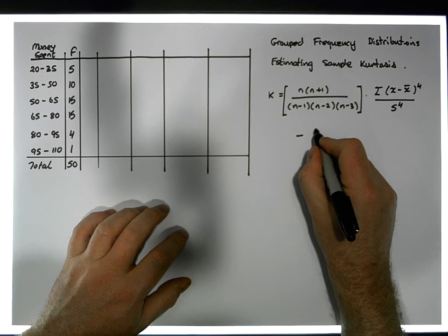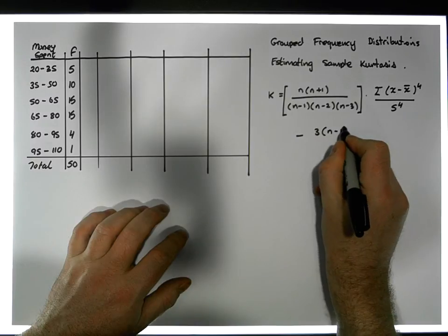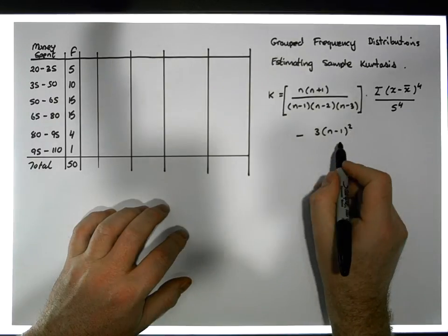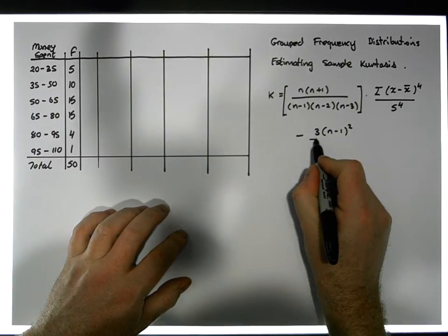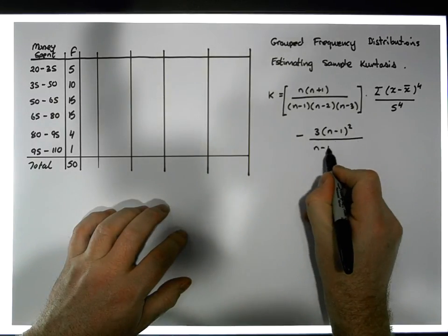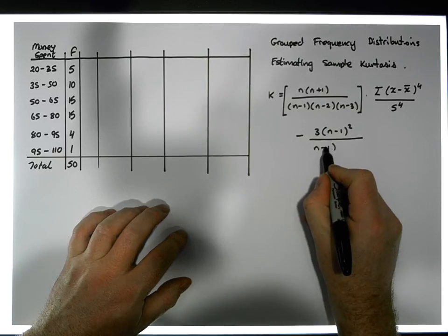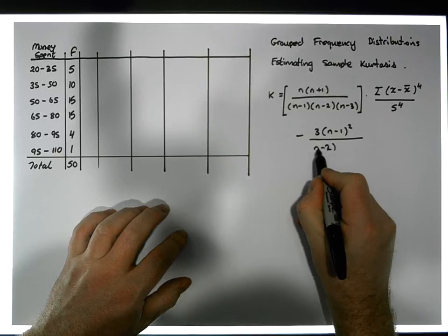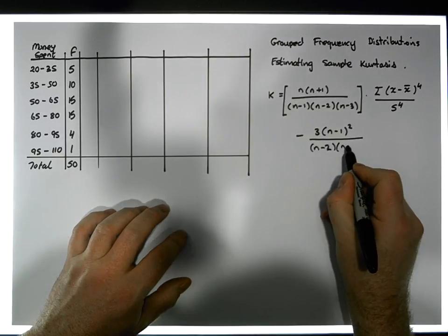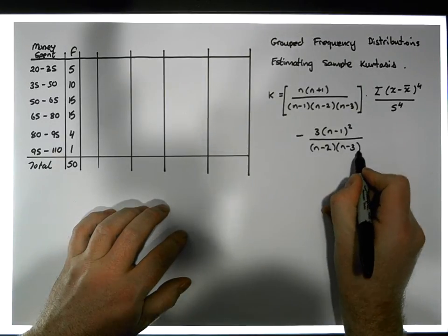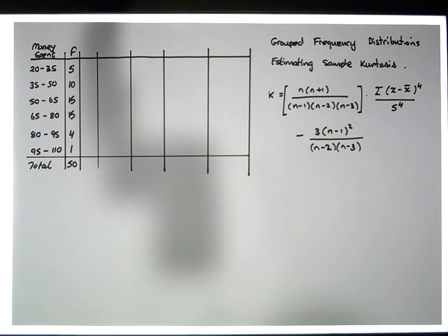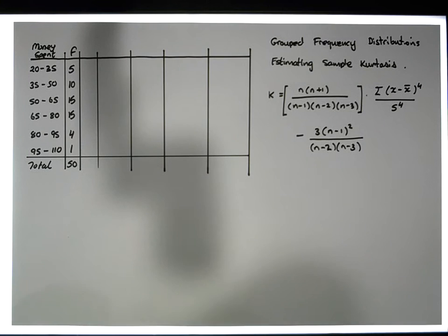When normalizing, we also subtract 3 times (n−1) squared divided by (n−2) times (n−3). It looks quite complicated but it's actually quite straightforward to use.